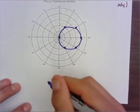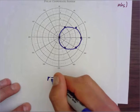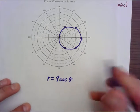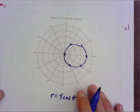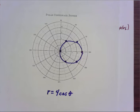That is the function that represents r equals four cosine theta. If you have any questions or comments on how to plot polar equations that are circles, type your questions below. We'll see you next time.